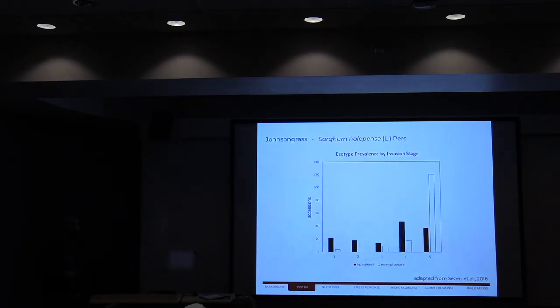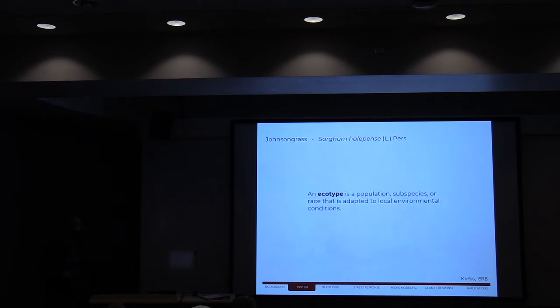And then about variation between populations. In the early stages of invasion, the agricultural populations were dominant versus the non-agricultural habitats where it occurred. Whereas coming to modern day, it's predominantly non-agricultural in terms of the habitats that it takes over. So there's been that switch and there's been a lot of variation. Johnson grass really satisfies all those conditions we need to study that type of change.